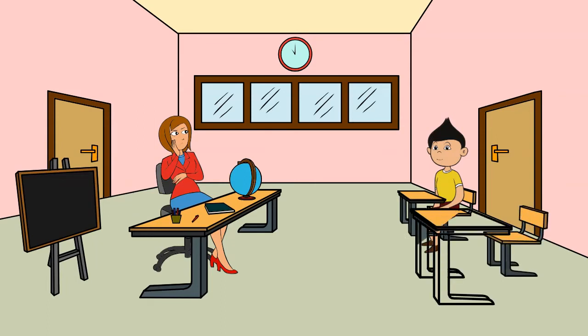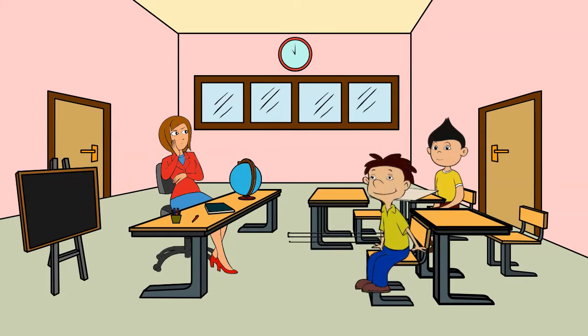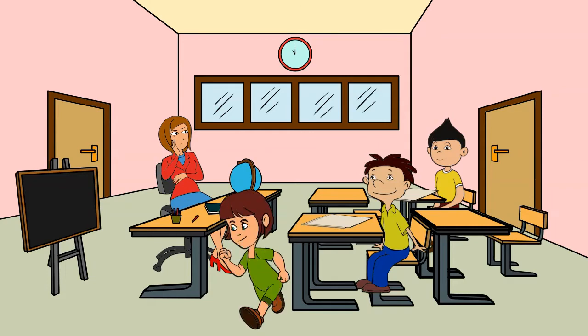Claire knows that many times Anne makes excuses to be up and moving around the classroom. Claire wants Anne to get up when she needs to, but also wants her to spend more time in her seat. Claire isn't sure of the best way to accomplish this.